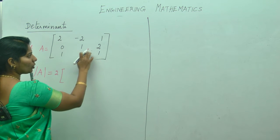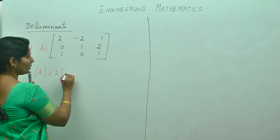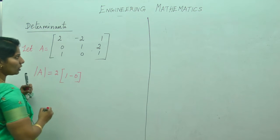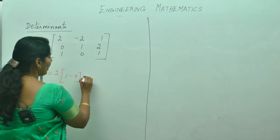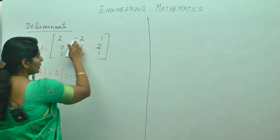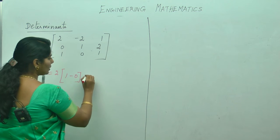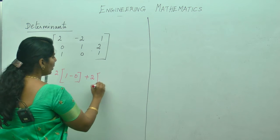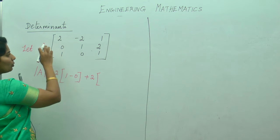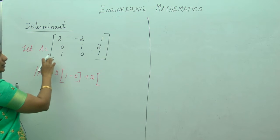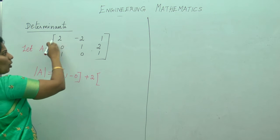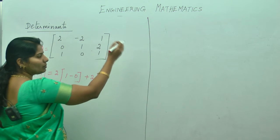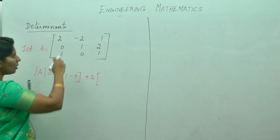From this, you will cross multiply it: 1 minus 2×0 = 1. Next one — minus into minus will give you plus. As I told you earlier, to find the determinants you need to take the alternative signs: plus, minus, plus, minus, and so on.